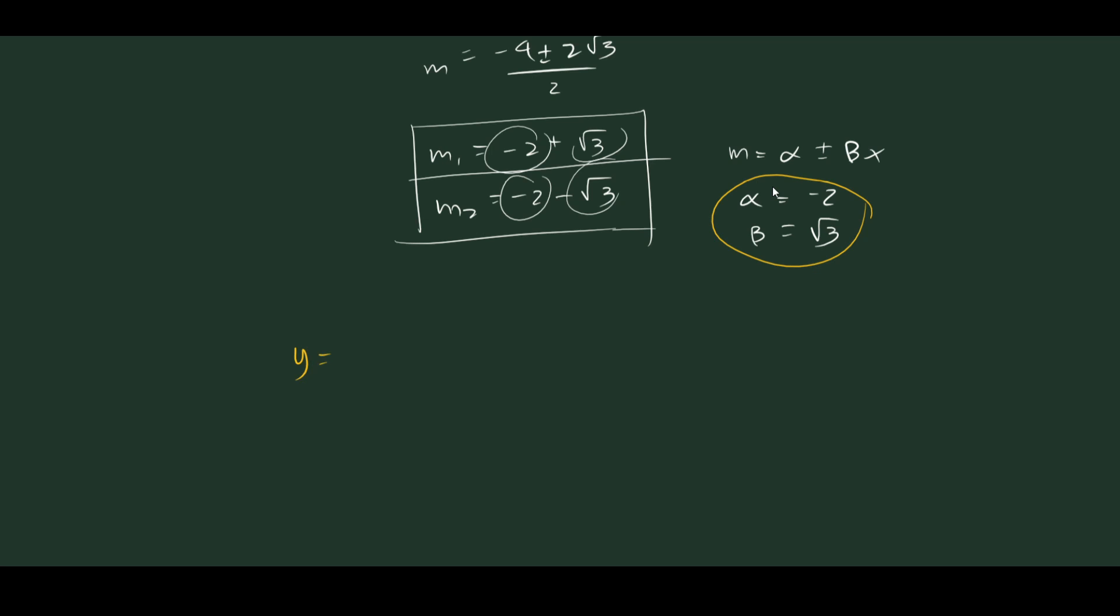So let's recall the general form. Y is equal to c1 e raised to alpha x cosine beta x plus c2 e raised to alpha x sine of beta x.